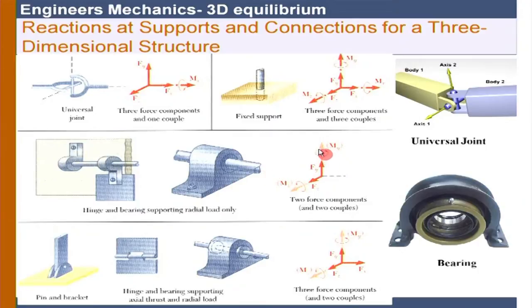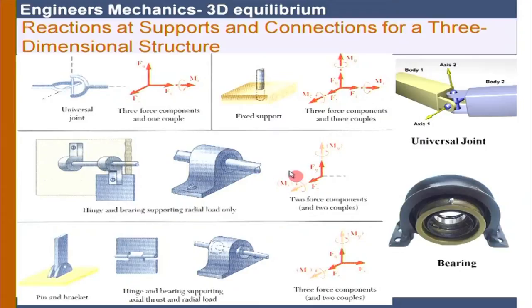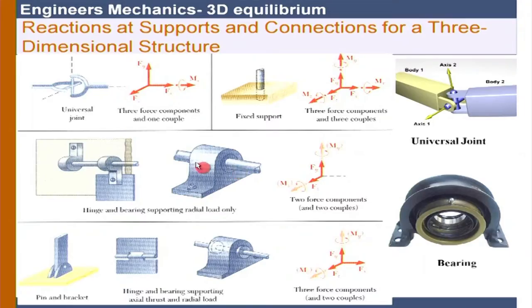All other reactions are present — moment about one axis, moment about the other axis, and the two force reactions. The axial reaction is absent because no axial load is applied. If an axial load is applied, a thrust bearing is needed, which adds a force reaction along the axial direction.